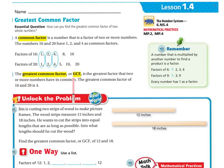The greatest common factor, or GCF, is the greatest factor that two or more numbers have in common. The greatest common factor of 16 and 20 is 4.